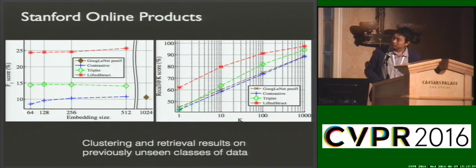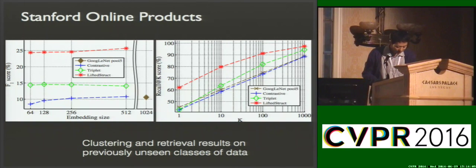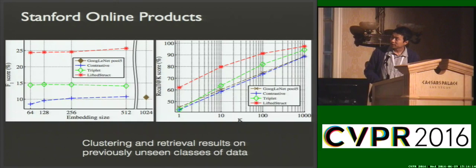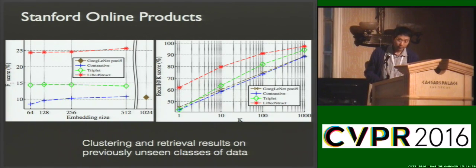For experiments, the figure on the left shows the experiment on clustering, and on the right it shows the numbers on nearest neighbor retrieval. The red curves are our method. On the left, we show the performance in F1 score on clustering previously unseen classes of examples. On the right, we show the nearest neighbor retrieval performance at different k values versus recall at k. As you can see, we show significant improvement versus contrastive and triplet embedding.